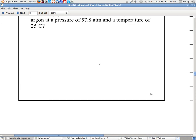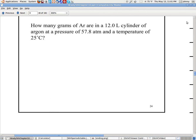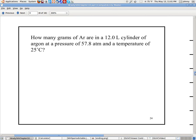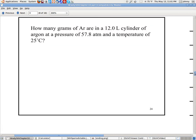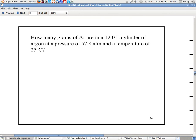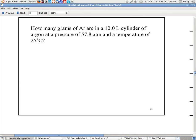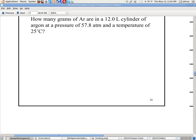This is the problem that we're going to be working tonight. Let me try to pull it back up here. It says, how many grams of argon are in a 12-liter cylinder of argon at a pressure of 57.8 atmospheres and a temperature of 25 degrees Celsius? So really the thing to do here is actually just try to write down the information that's given.